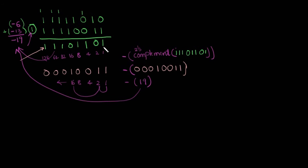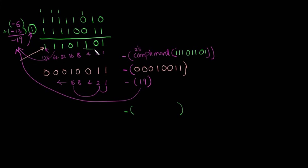Remember this point: whenever you see an MSB as 1 in two's complement addition or subtraction, the number is in two's complement form representing a negative number. To get the original number, put a minus sign in front and take the two's complement of the result — then you will get the original number back. That's all for this video guys. Until next time, happy learning.